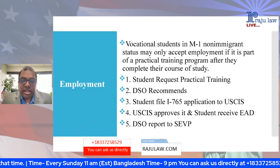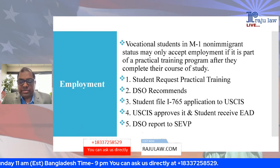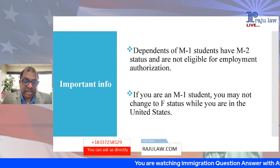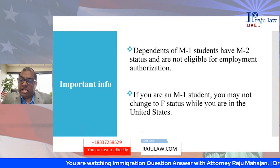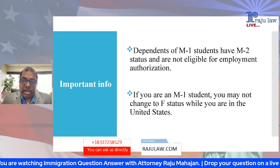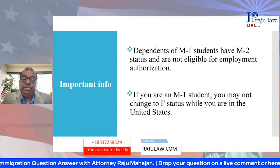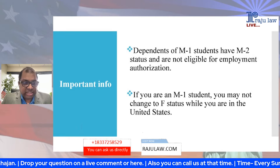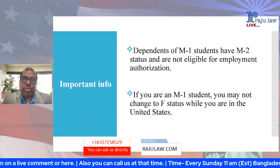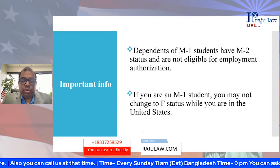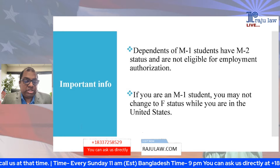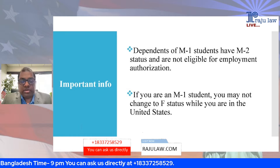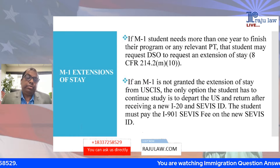This process is very unlike F1 or J1 categories. Importantly, dependents of M1 students have M2 status, similar to F2, and are not eligible for employment authorization. Also, if you are an M1 student, you may not change to F status while you are in the United States. Many students think they can come under M1 and then change to F status, but that is not possible.